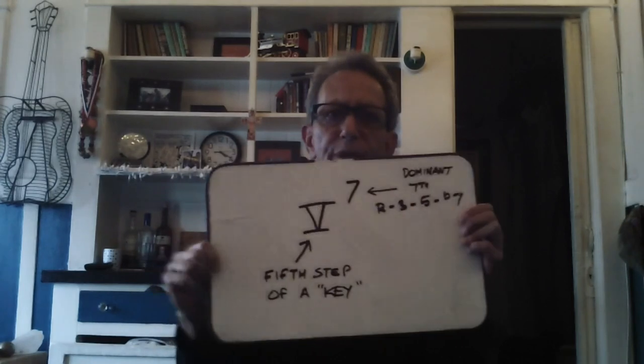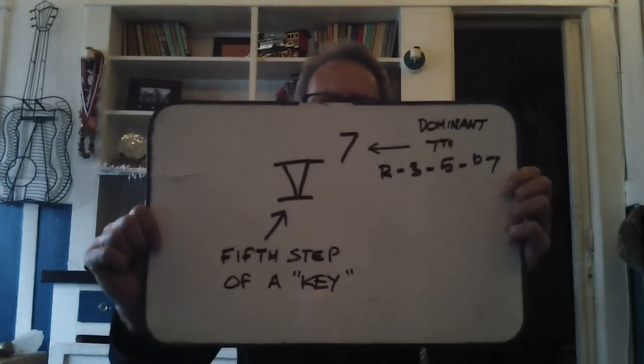But a dominant seventh is different — and the language we use is a little vague and incorrect. When you hear a musician talk about a seventh chord, they're not talking about a minor seventh or a major seventh, they're talking about the dominant seventh chord, and that's called the V7.